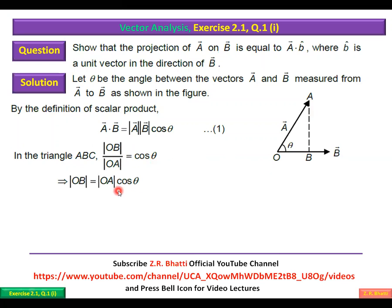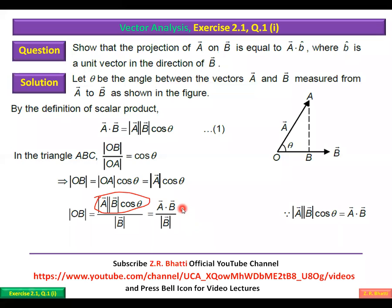This is OB equals OA cos theta. Then OA, that is vector A magnitude. This is vector B magnitude. So we have A magnitude B magnitude cos theta, which equals A dot B. To be A dot B, this is the same, it is A dot B.